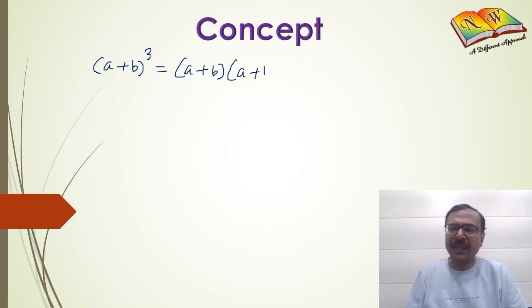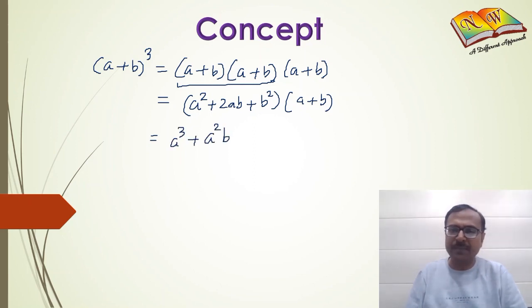So (a+b), (a+b) and (a+b). When you multiply (a+b) two times you get a² + 2ab + b², and when you multiply this trinomial by the binomial (a+b) you get six terms: a³ + a²b + 2a²b + 2ab² + ab² + b³.